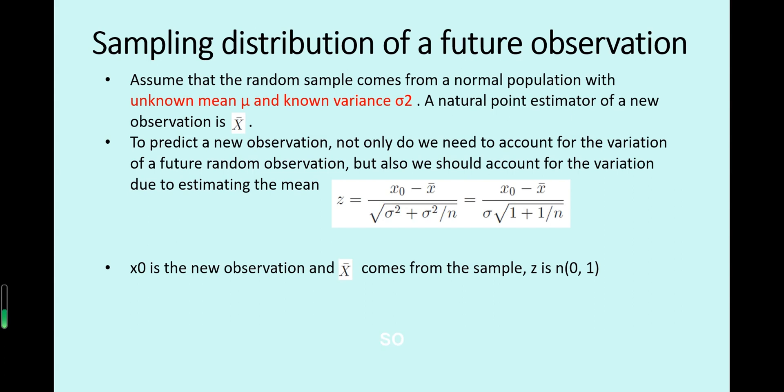So we want to get the sampling distribution of a future observation. So in this form the statistic called z which is a future observation x₀ minus the x̄ sample average then divided by square root of the summation of two terms. So these two terms is actually the variance of a future observation. So this variance combines of two parts.